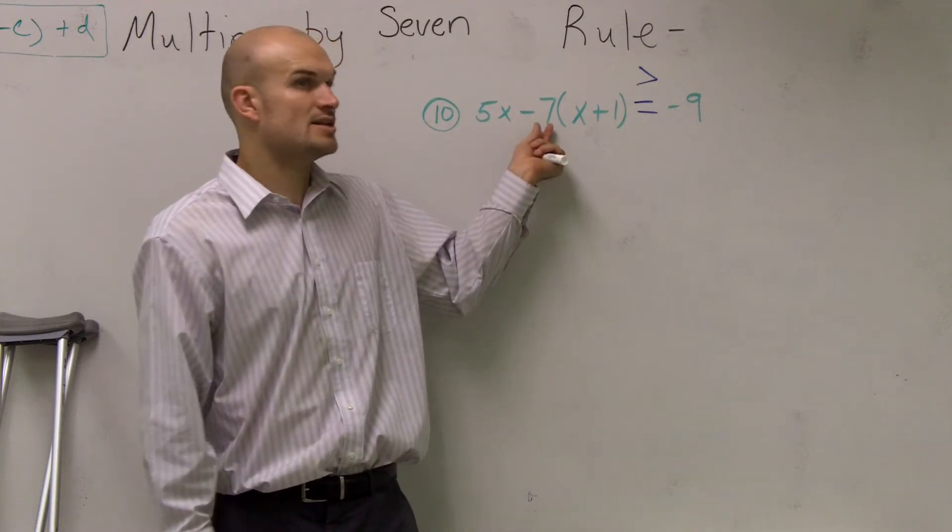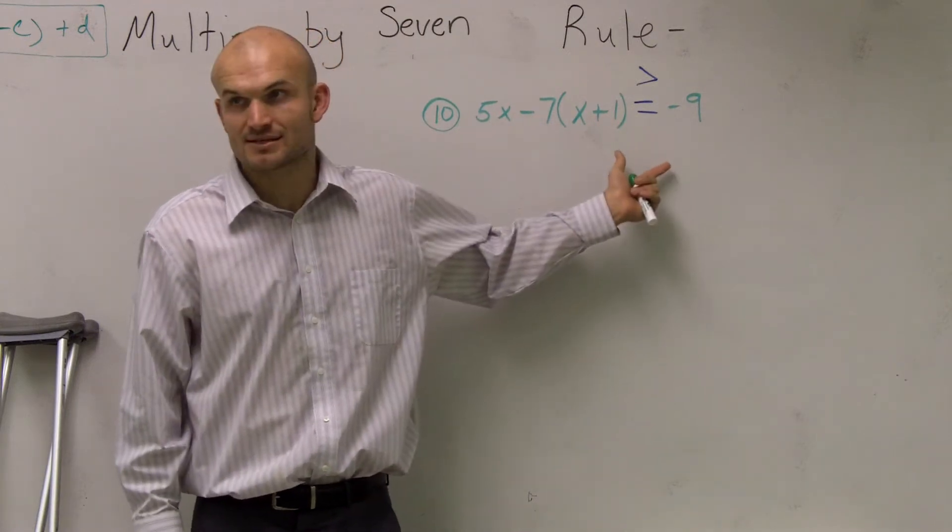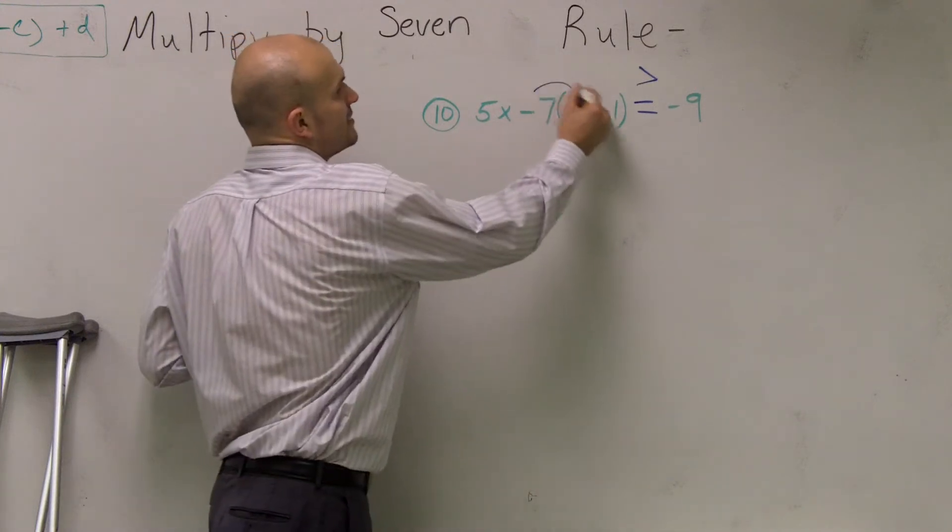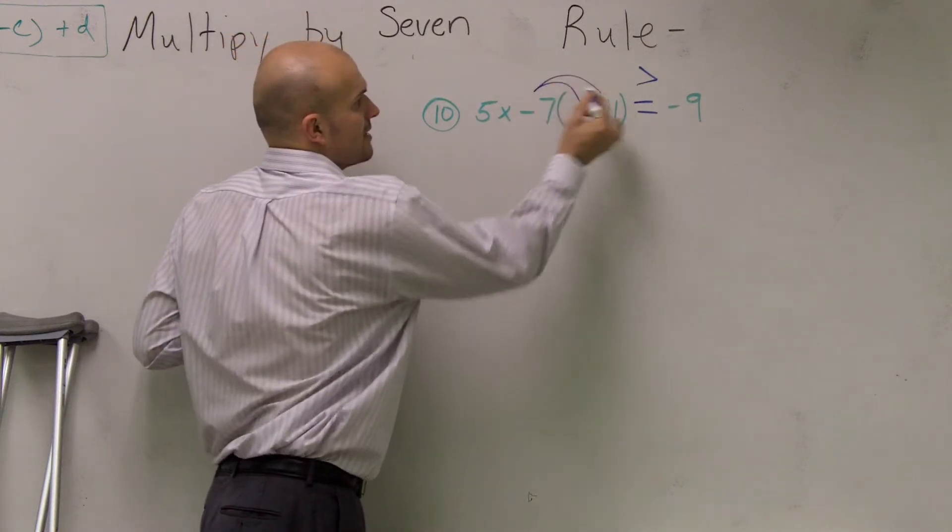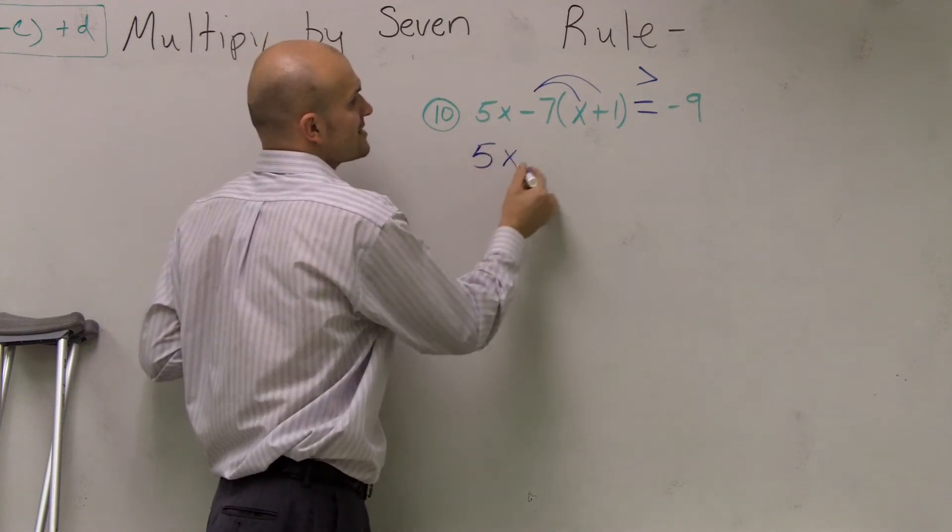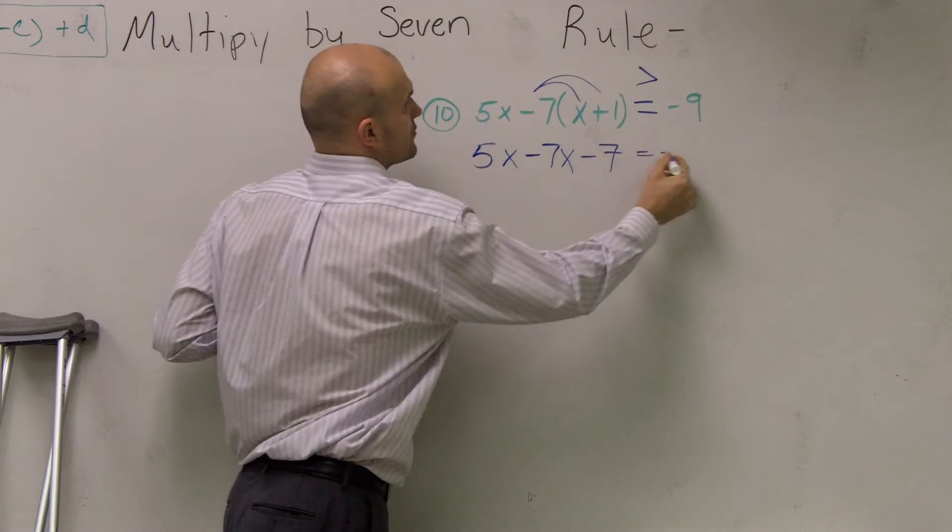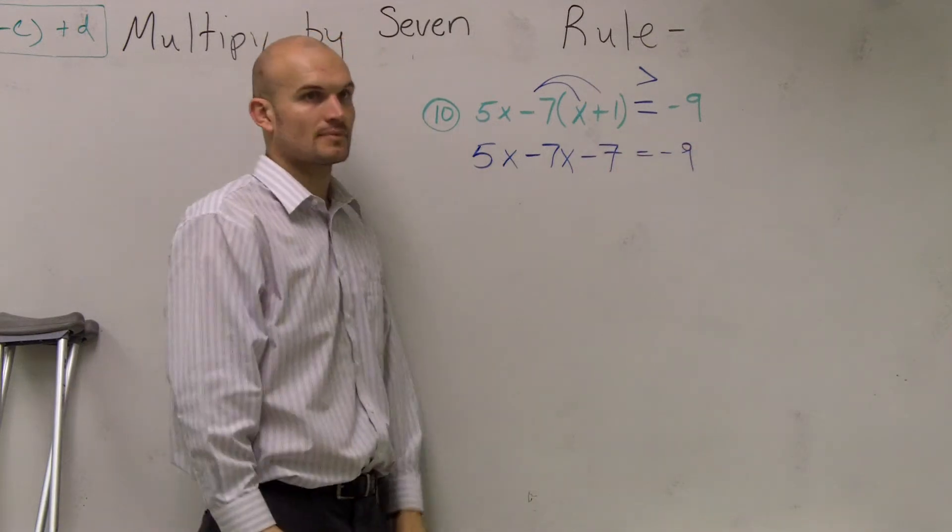Now remember, when you have a number outside parentheses, we need to use the distributive property. Meaning that negative 7 needs to be multiplied by the x and by the 1. So therefore, I have 5x minus 7x minus 7 equals a negative 9. Okay?